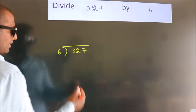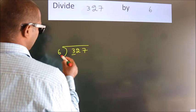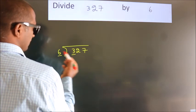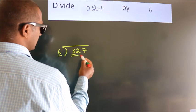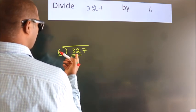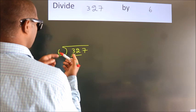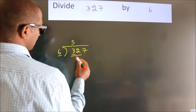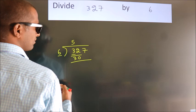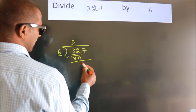Next, here we have 3. Here 6. 3 is smaller than 6, so we should take 2 numbers: 32. A number close to 32 in the 6 table is 6 fives, 30. Now we should subtract. We get 2.